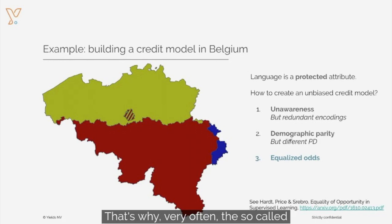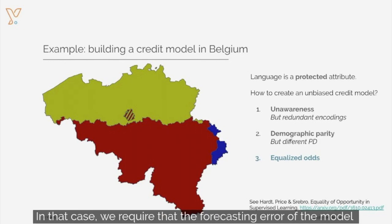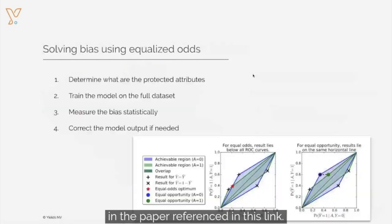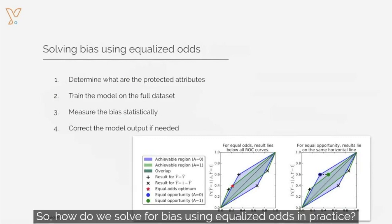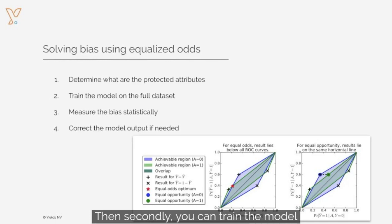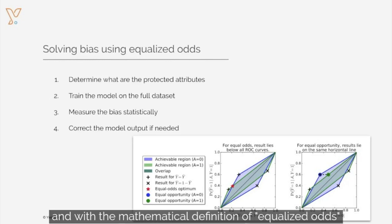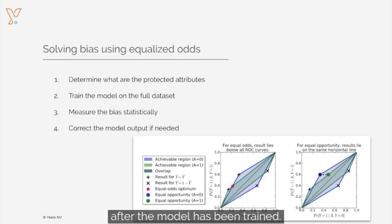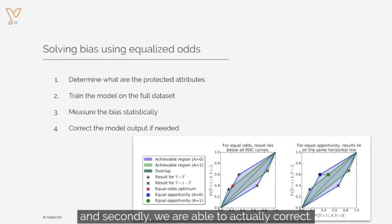That's why very often the so-called equalized odds method is chosen. In that case, we require that the forecasting error of the model is the same independent of the value of the protected attribute. If this is of interest, you can find more information in the paper referenced in the link. So how do we solve for bias using equalized odds in practice? First of all, you have to list what are the protected attributes — the attributes for which you want to make sure that no bias exists. Then secondly, you can train the model on the full dataset and with the mathematical definition of equalized odds, you can actually measure the bias in a statistical fashion. In a last step, you can correct the model output algorithmically after the model has been trained. By using this very systematic approach, we are first able to quantify the degree of bias and secondly, we are able to correct it.